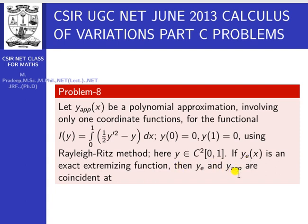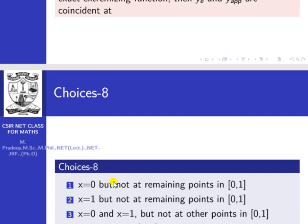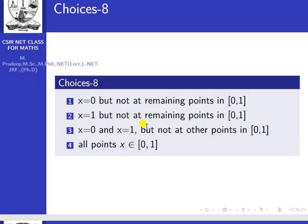The question asks at which points the approximate and exact solutions coincide. The options are: at x = 0 only, at x = 1 only, at x = 0 and x = 1 but not at other points in [0,1], or at all points x belonging to [0,1].